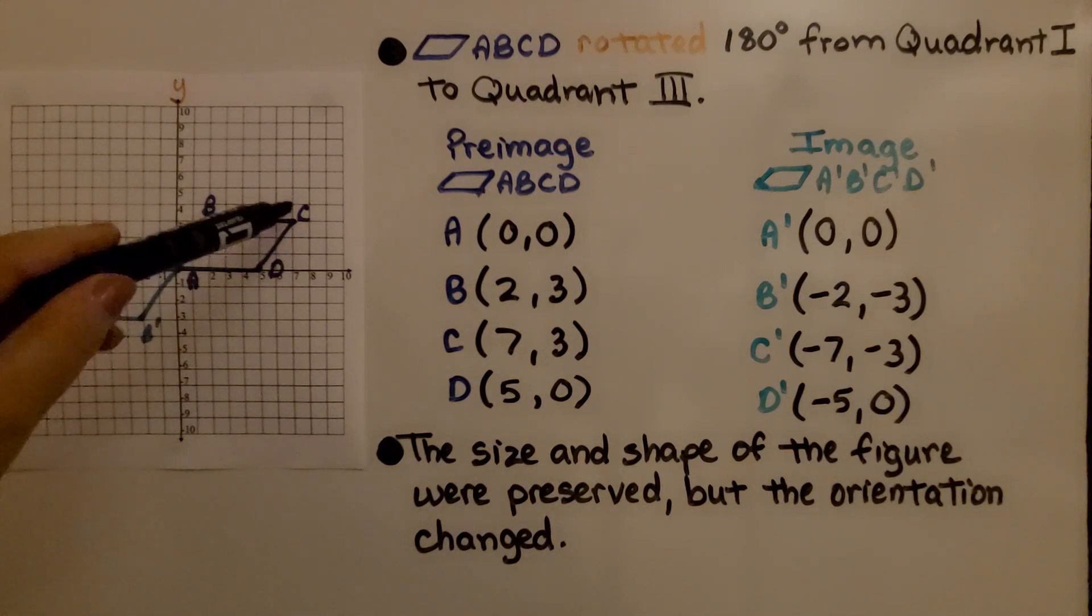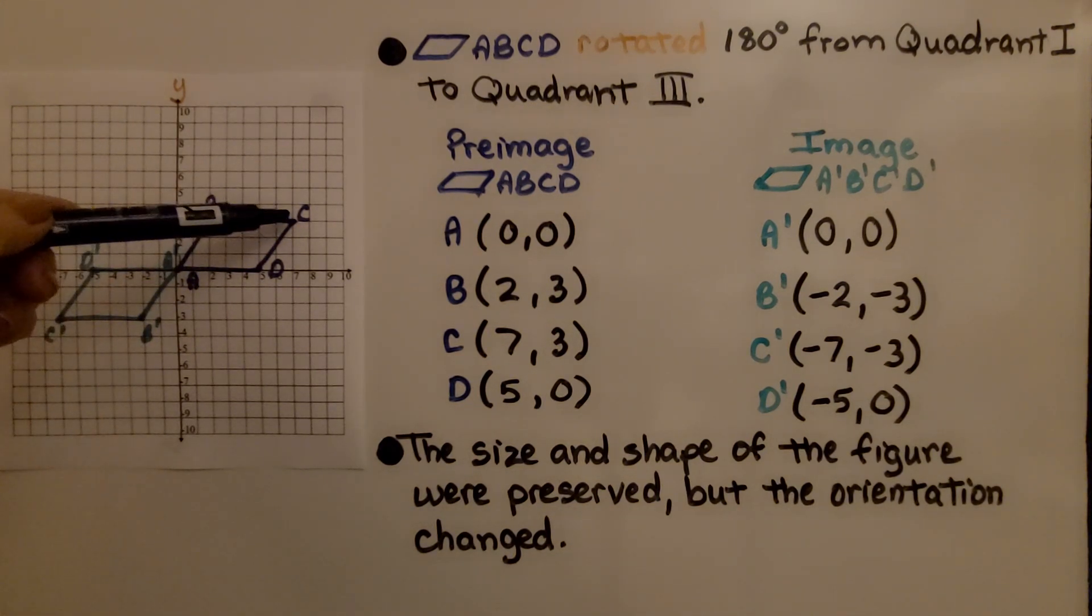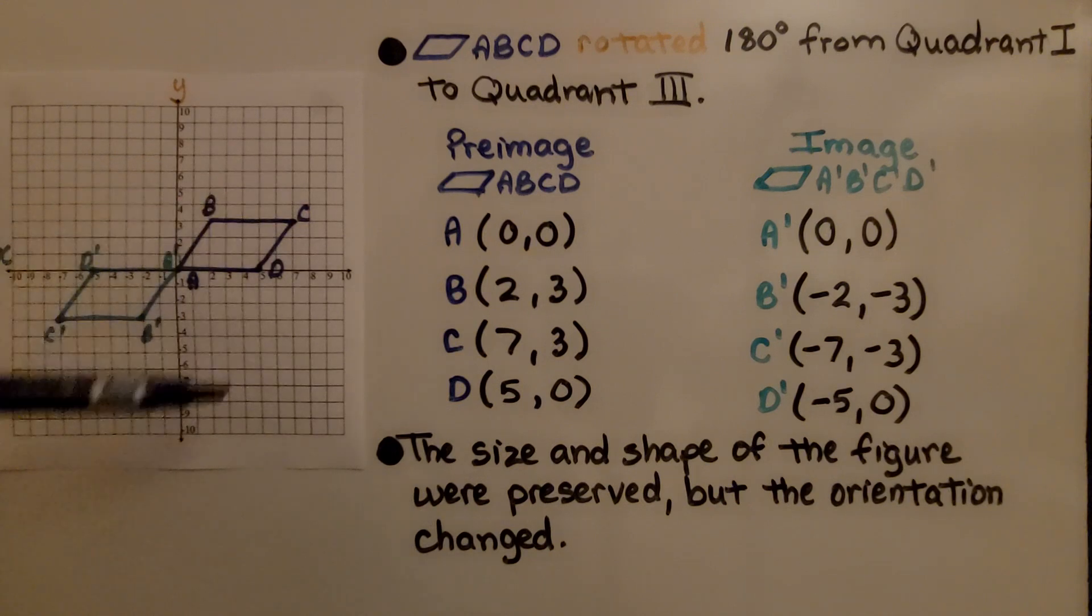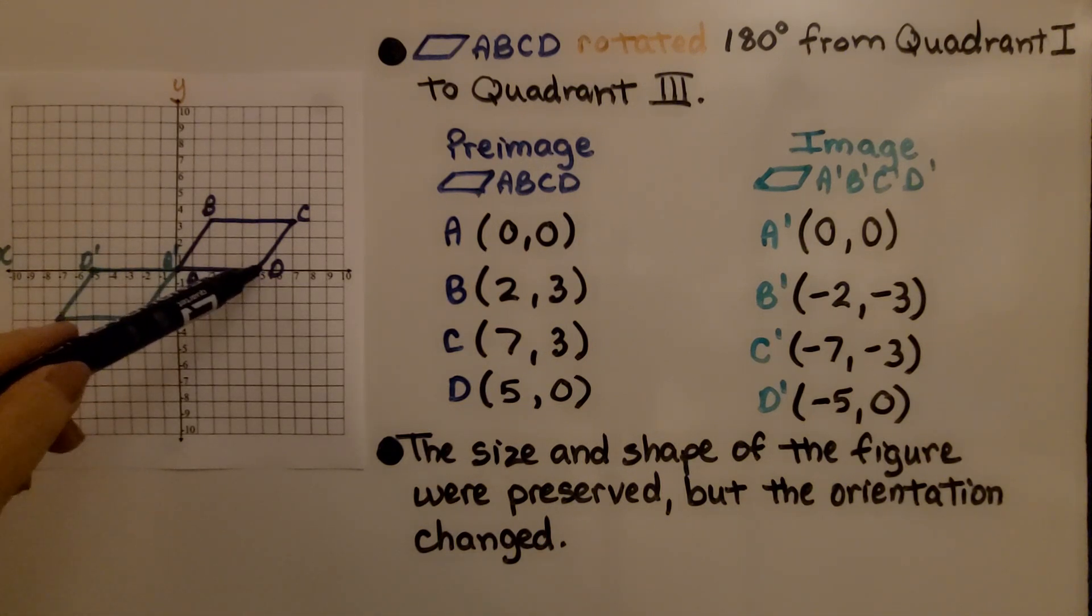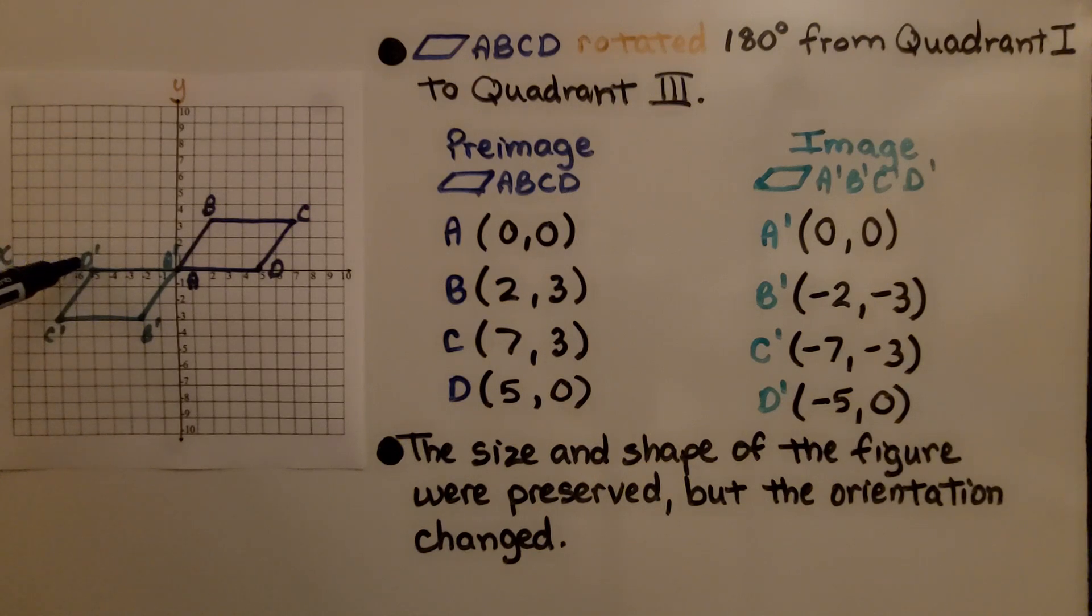And look at C. It goes from (7, 3) to (-7, -3). And for D, we're at (5, 0). And for D prime, we're at (-5, 0).